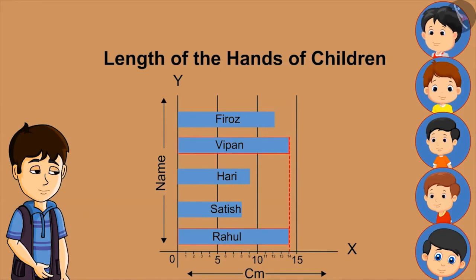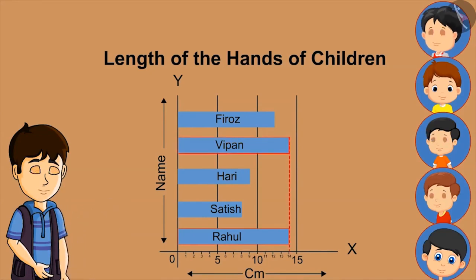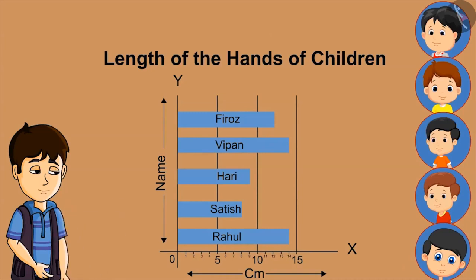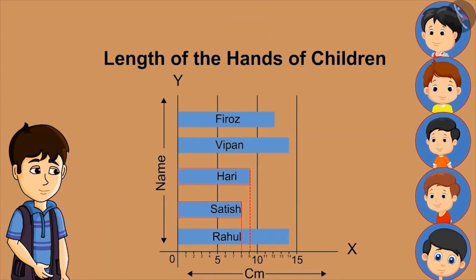Rahul and Vipan. How long? 14 cm. Absolutely right. Can anyone identify the hands which are less than 11 cm in length? Satish and Haris. Yes, absolutely right.